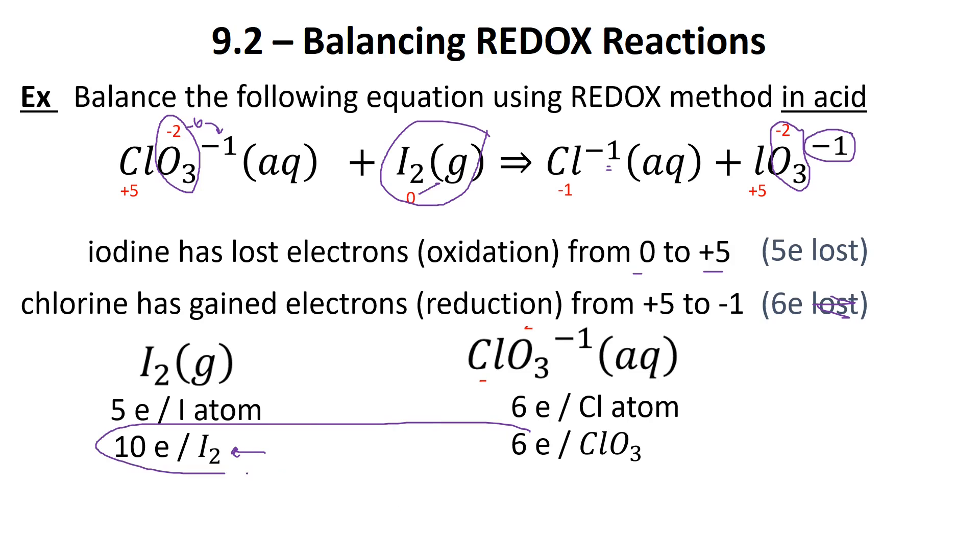Now we can do the lowest common denominator between six and 10. Six times 10 is 60, but it's actually a little lower. We get 30 as our lowest common denominator. What value do we need to multiply 10 by to get 30? That'll be three. This three is what's going to eventually go in front here. On the other side, what times six is 30? That's five. That five is what's going to go in front on that side.